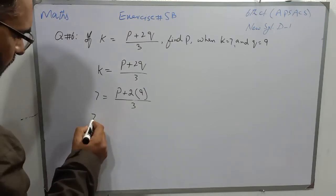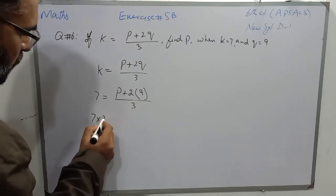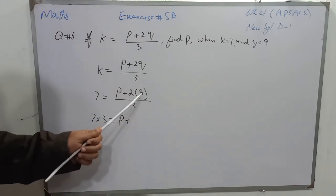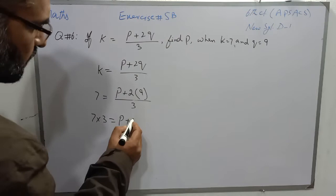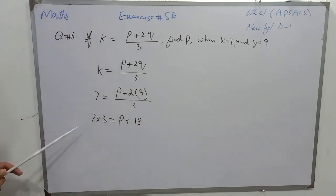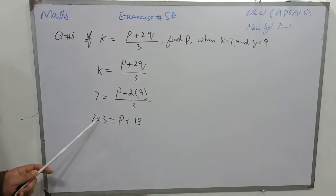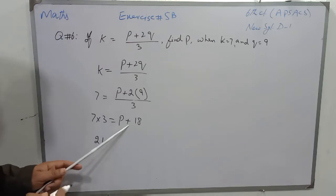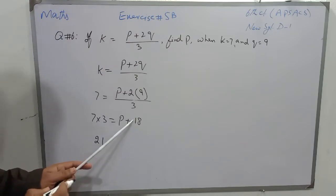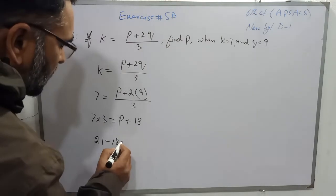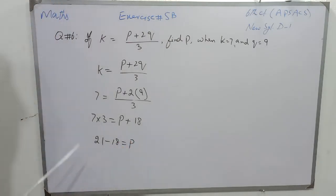So it is written as 7 multiplied by 3 is equal to p plus — when 2 multiplies with 9, 2 nines are 18, we will get 18. Now multiply 7 and 3: 7 threes are 21. And this 18 is plus on the right side; when we transfer it to the other side it will become minus. So it is 21 minus 18 is equal to p.